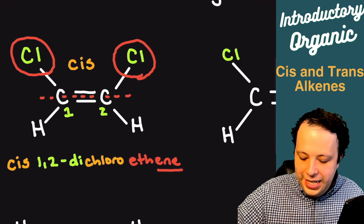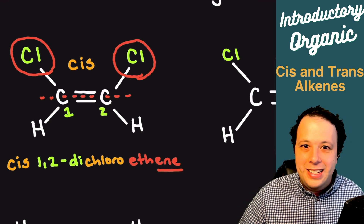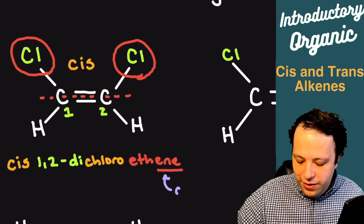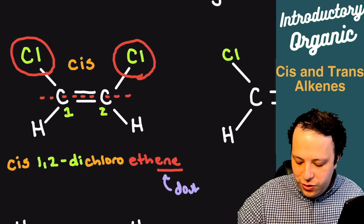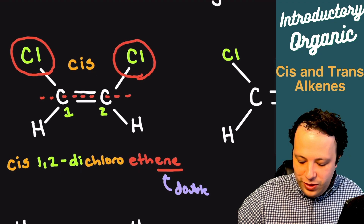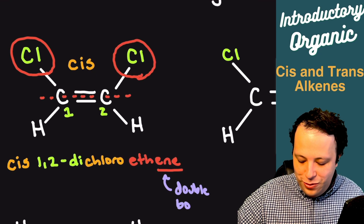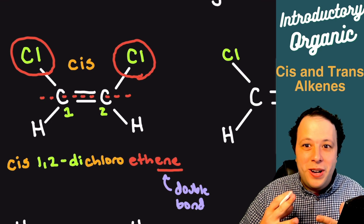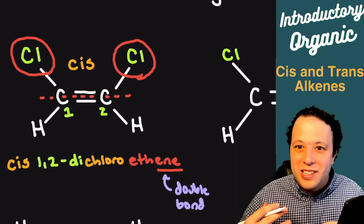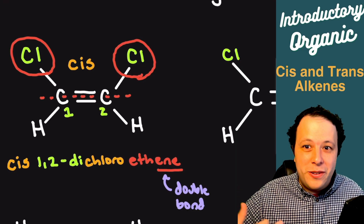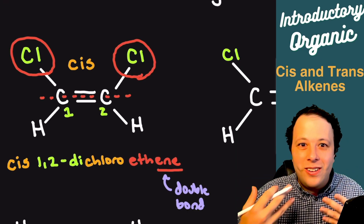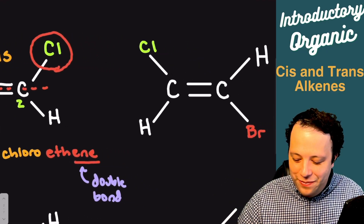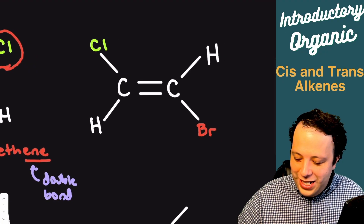The -ene ending denotes the double bond — make sure you include that ending when doing these. Don't accidentally use an alkane ending; it's really easy to do that, especially when you're first learning this.